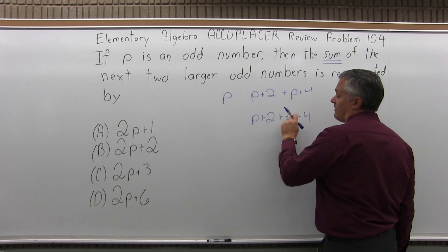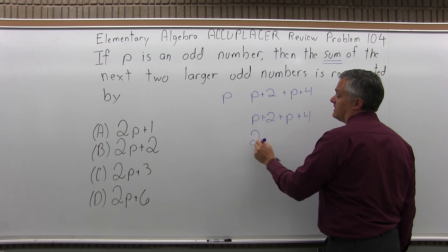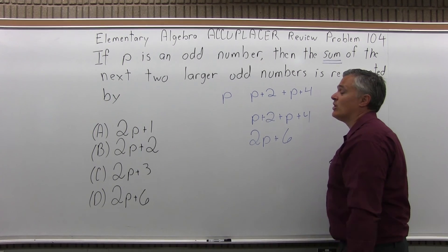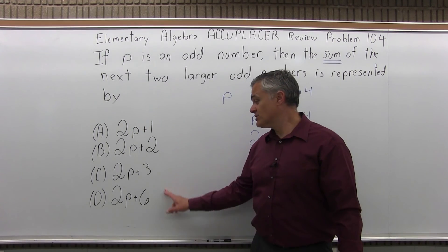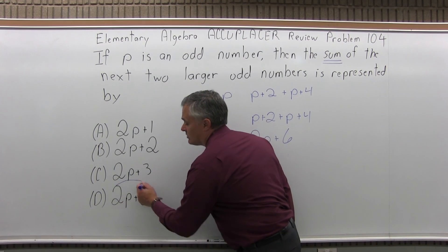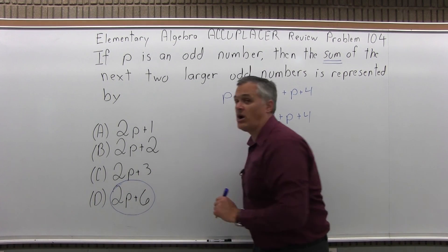And now, I can combine the two P's here. P and another P is 2P. And then two and four is six. So, if I look through my list of options, 2P plus six is option D. So, the answer to problem 104 is option D.